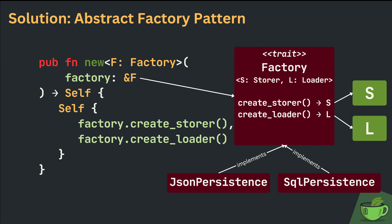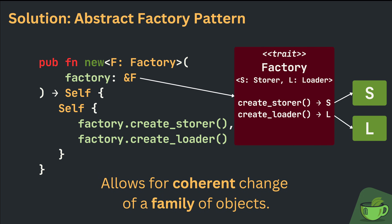Of course, this is only true if the implementing structs of the Factory trait are consistent themselves. This is way easier to check than making sure that each individual use of a Storer and a Loader aligns. We can now easily see where the pattern got its name from. It is a Factory because it creates objects, and it is abstract because we want to use it behind a trait to leverage polymorphism. The main use case is to allow for coherent change of a family of objects which belong together — in our case, the Storer and the Loader.